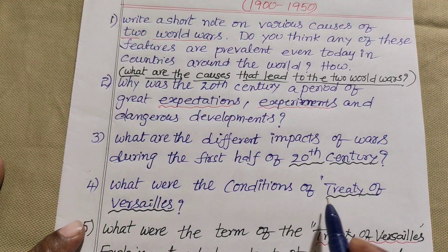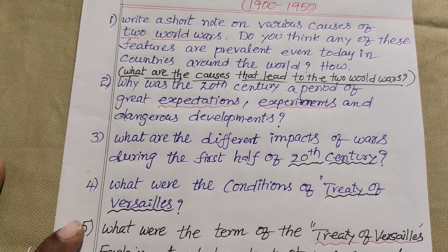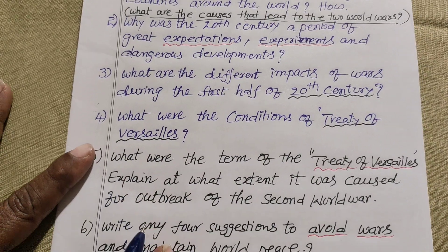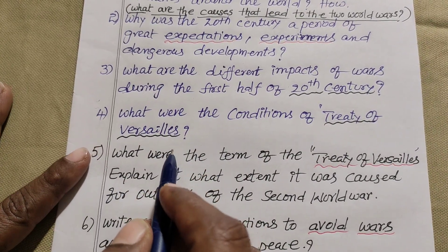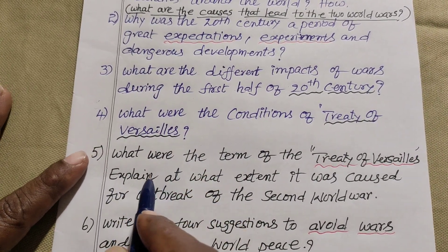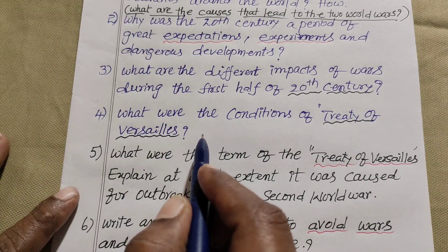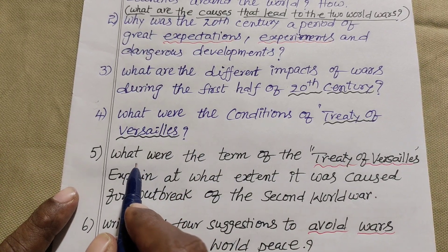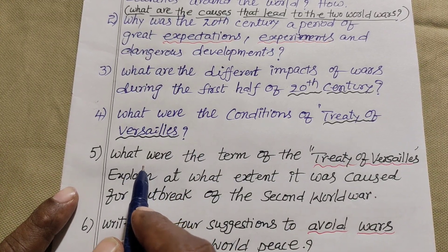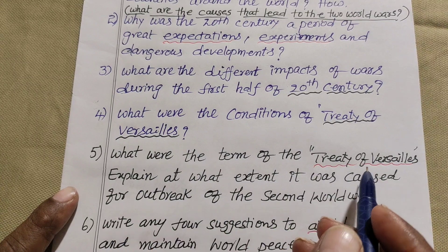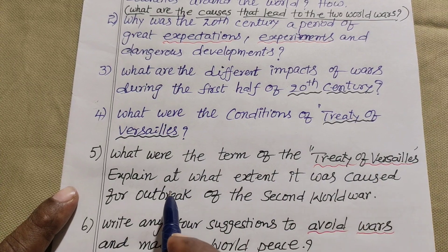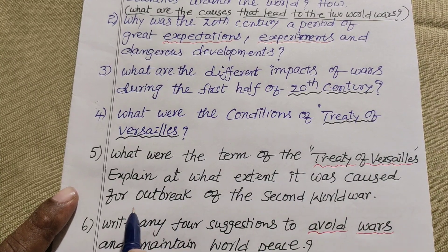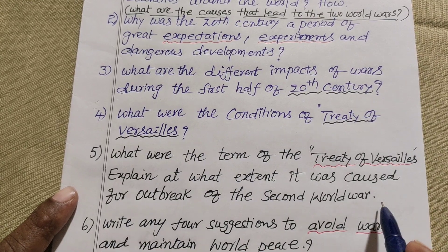What were the conditions of the Treaty of Versailles in the first half of the 20th century? Fifth question: what were the terms of the Treaty of Versailles? Explain to what extent it was a cause for the outbreak of the 2nd World War.